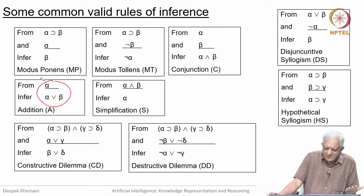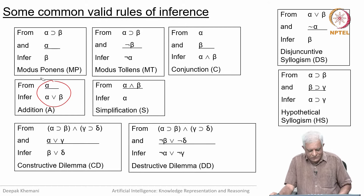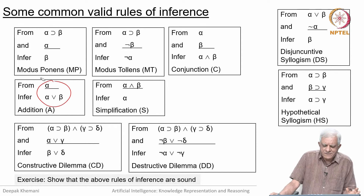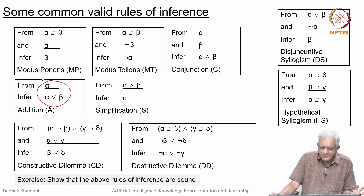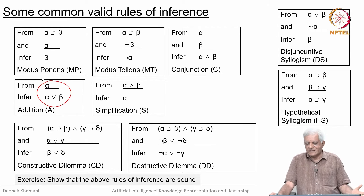There are some more rules of inference: constructive dilemma, destructive dilemma, disjunctive syllogism, hypothetical syllogism. I would encourage you to study these rules of inference and construct the truth tables for them to show that these are all valid rules of inference, which basically means you could use any of them to derive a new sentence.